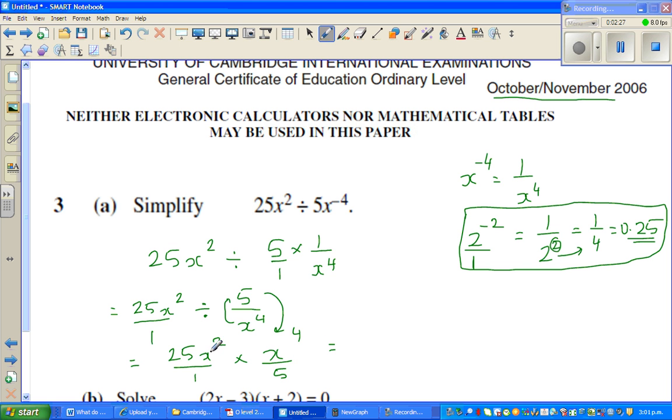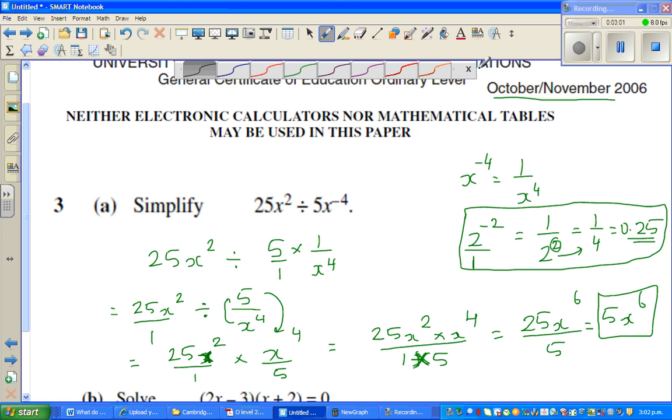So this is 25x squared over 1 times x to the power of 4 over 5. When you're multiplying exponents or you're multiplying powers, you add the exponents. So this is 25x squared times x to the power of 4 over 1 times 5. This is 25x to the power of 6 over 5. So your final answer would be 5x to the power of 6. Just like that. So this is your answer.